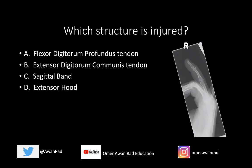The lateral view is very telling. What we have here is an avulsion fracture along the dorsal base of the fourth distal phalanx. You can notice that this small fracture fragment is displaced dorsally. This is the dorsum or the posterior aspect of the finger, this is the volar aspect of the finger, and we're trying to figure out what structure inserts along the dorsal base of the distal phalanx.